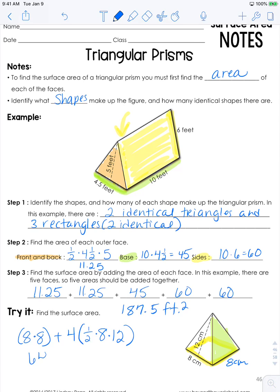And then 8 times 8, of course, is 64 plus 4 times 1/2 of 8 is 4 times 12 is 48. And the total surface area of this square pyramid is 256 centimeters squared.